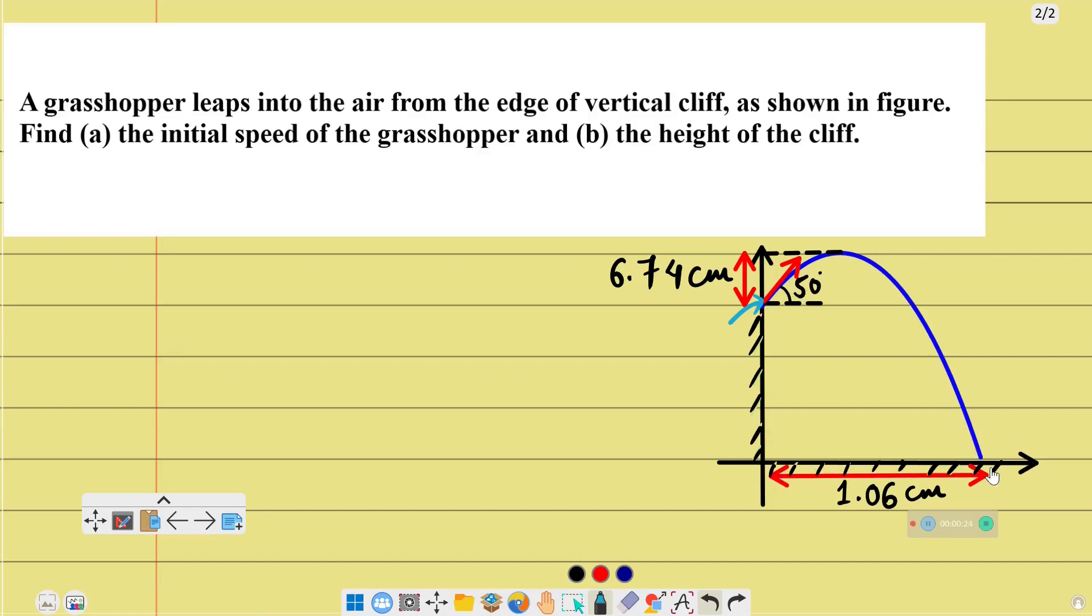The horizontal displacement is 1.06 cm. This is the horizontal range. Find the initial speed of the grasshopper.